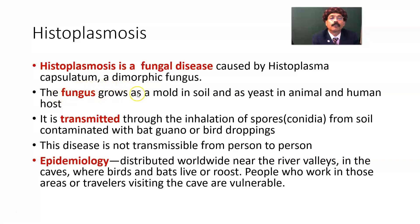The fungus grows as a mold in soil and as yeast in animal and human hosts. In animal and human hosts, this fungus has a predilection to go to the reticuloendothelial system — the lung, liver, spleen, and bone marrow.